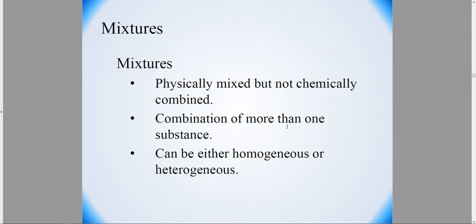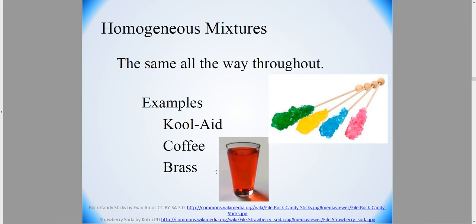So they're a combination of more than one substance, and they can either be homogeneous or heterogeneous. So let's look at the differences. Homogeneous mixtures have uniform composition. So Kool-Aid, you can't see the sugar or the dye or the water separately here. You can just see one uniform composition, which is a homogeneous mixture.